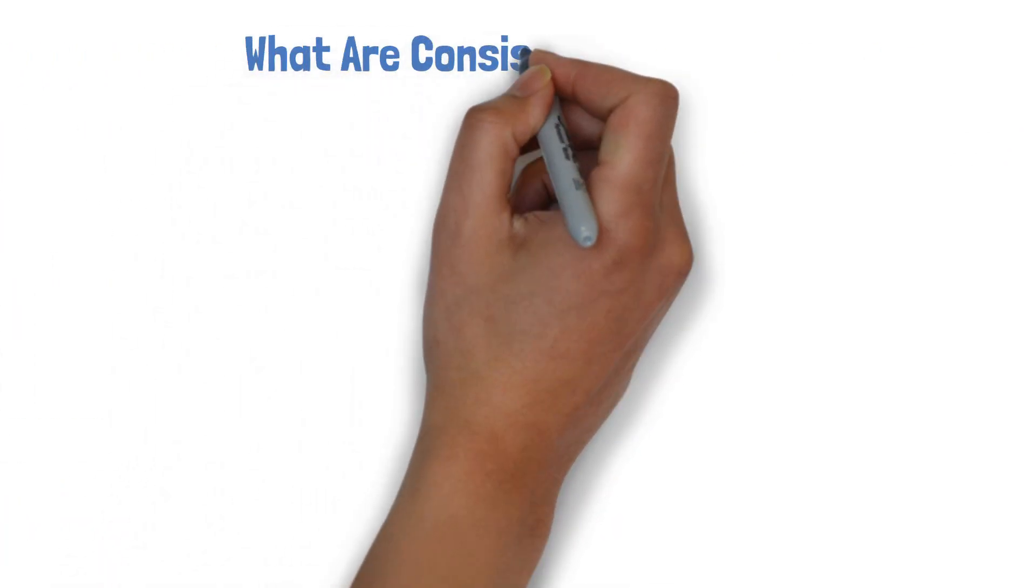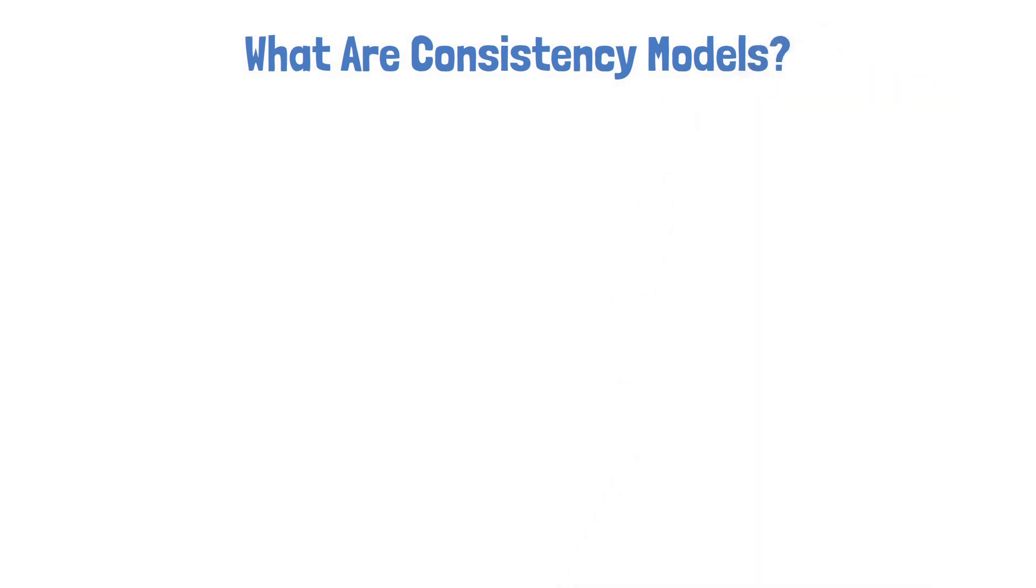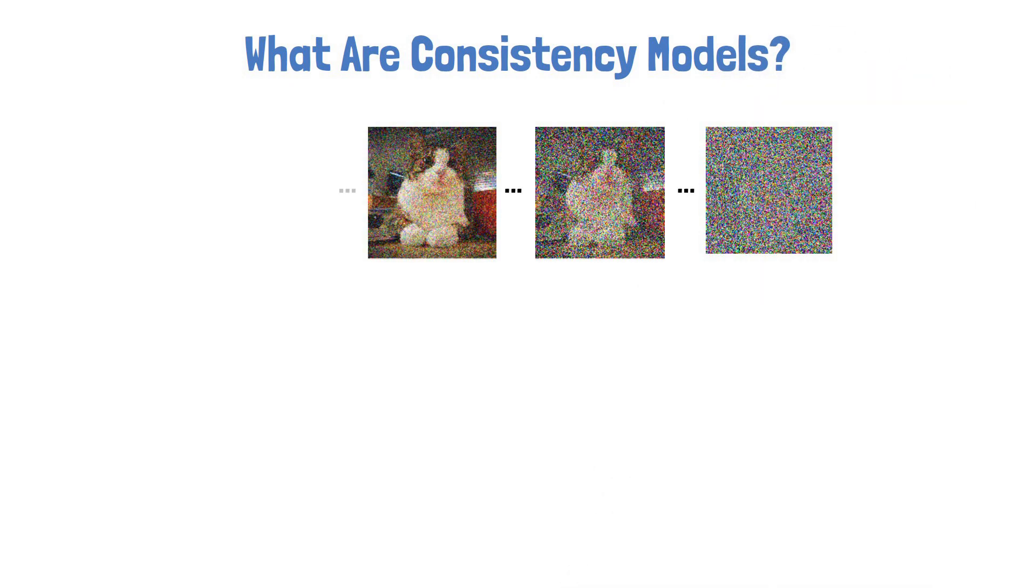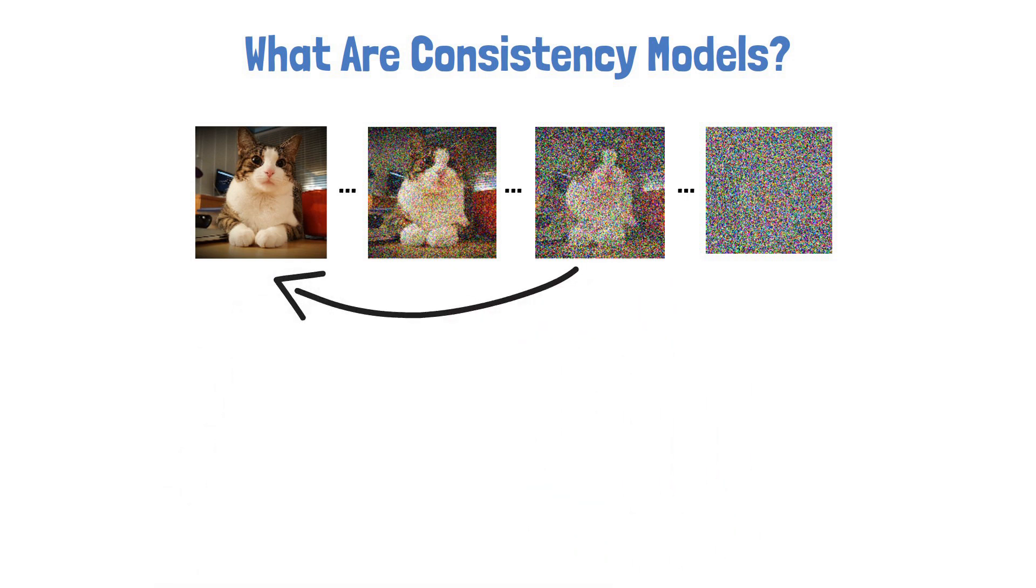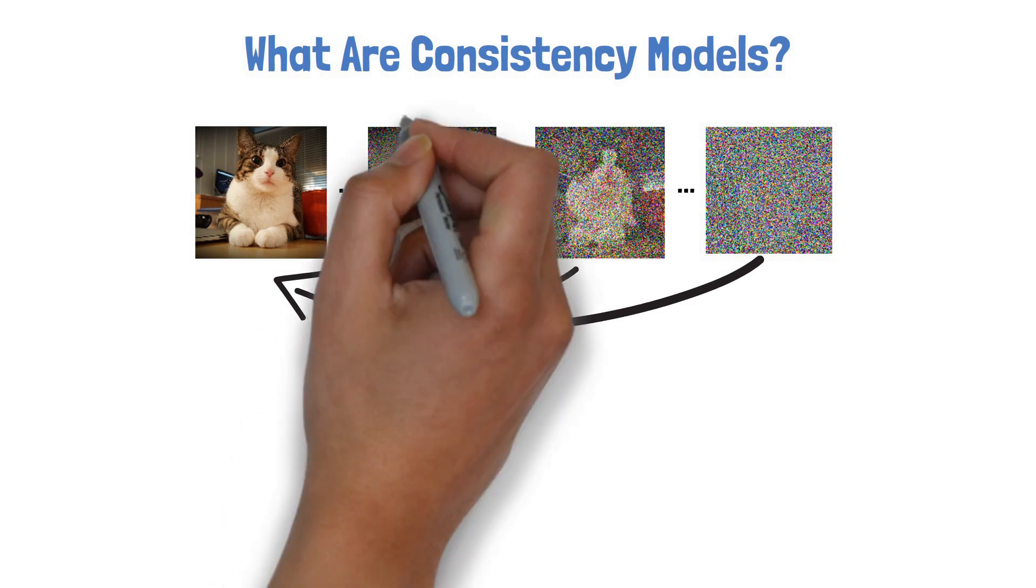So what are consistency models? Consistency models are similar to diffusion models in the sense that they also learn to remove noise from an image. So here is our cat again. However, consistency models add a new idea of also learning to map between any image on the same denoising path to the clear image.